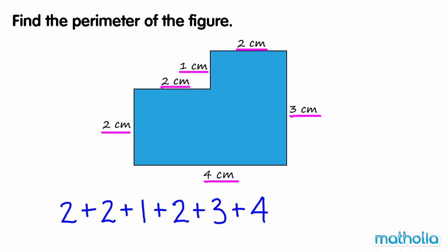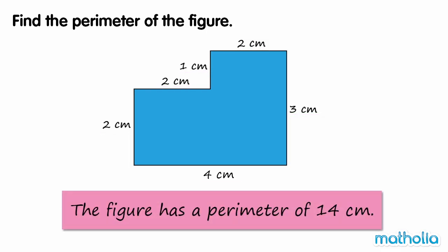2 plus 2 plus 1 plus 2 plus 3 plus 4 equals 14. So the figure has a perimeter of 14 cm.